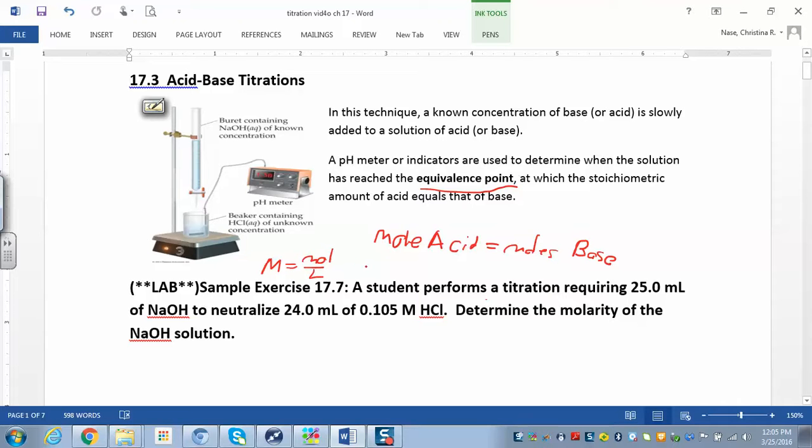If I just multiply them together I can figure out what the moles are going to be. Does that kind of make sense? So moles over liters times liters gives you moles. So if I know the molarity and I know the volume, I know the moles. And if the moles of the acid equals the base at the equivalence point.